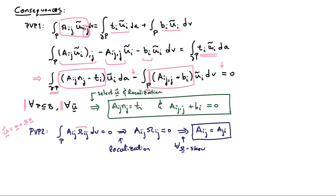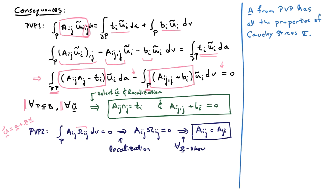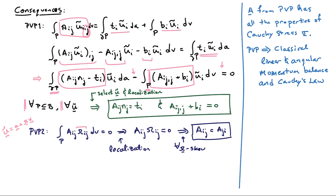Now this is starting to look very familiar. What we can see is that the tensor A from the principle of virtual power has all the properties of the Cauchy stress sigma. So I could have just started by writing down the principle using sigma instead of A, but it's actually a consequence of the principle of virtual power that the tensor field appearing in the principle is, in fact, the Cauchy stress tensor. The principle of virtual power implies all the classical laws of mechanics: in particular, linear and angular momentum balance and Cauchy's law.